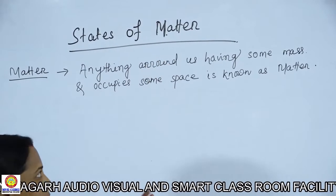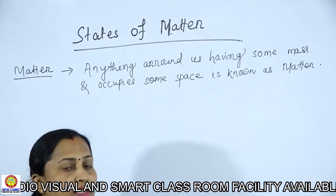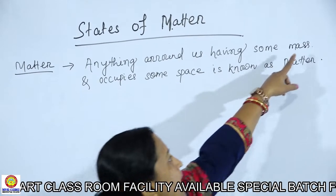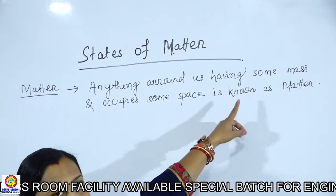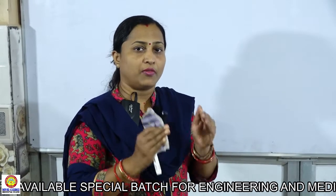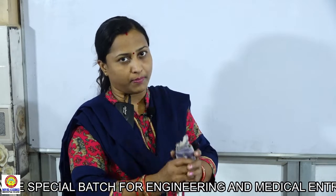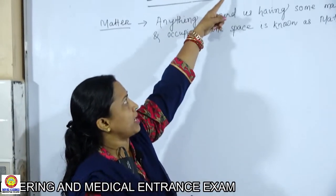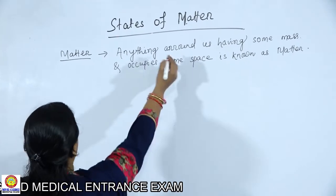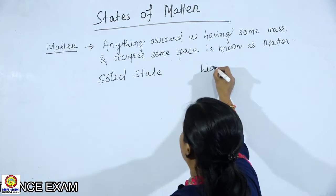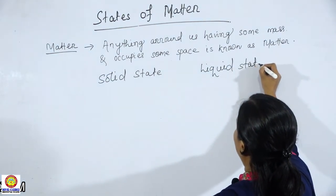What is states of matter? The states of matter is matter. What is matter? Anything around us having some mass and occupying some space is known as matter. The states of matter are considered: matter exists generally in solid state, liquid state, and gaseous state.